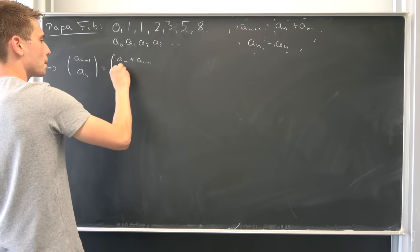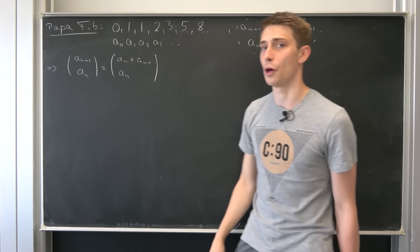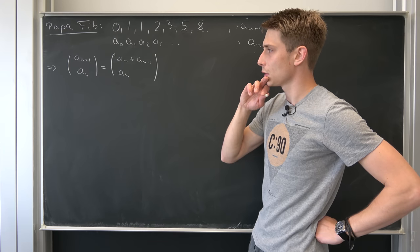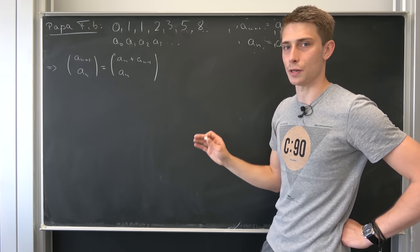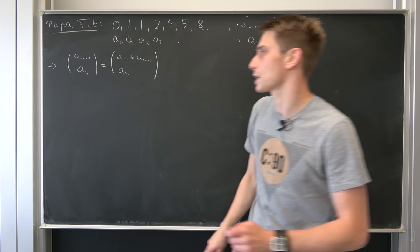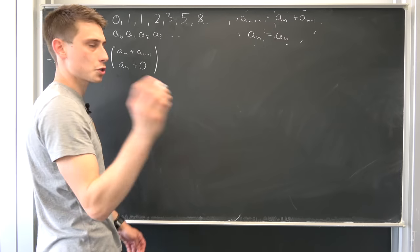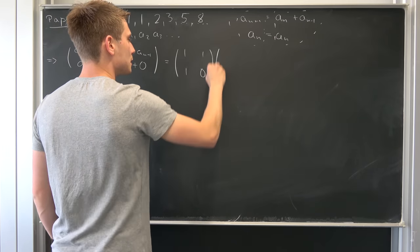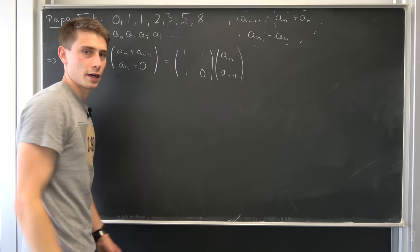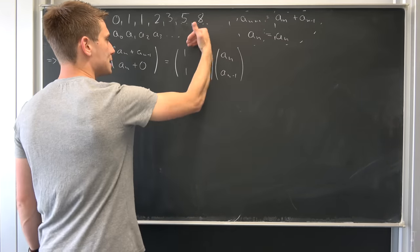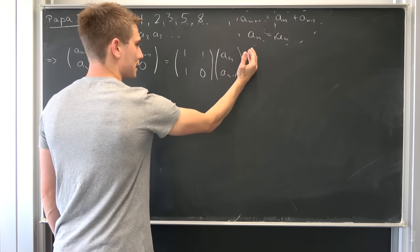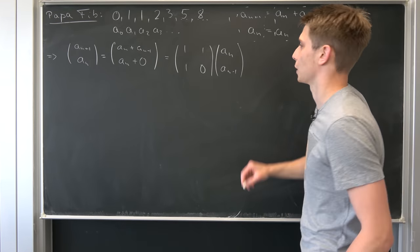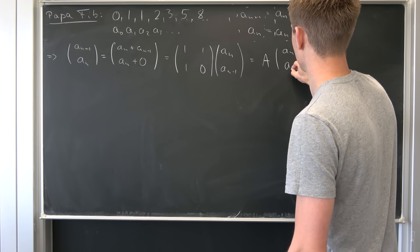We can go even further: this right here has some addition, so it looks like we took a matrix and multiplied it by a vector. We can add a zero in the second line and it wouldn't change anything. This observation allows us to write this as the matrix [[1,1],[1,0]] times [a_n, a_{n-1}]. We are going to call this matrix A, so this is A times [a_n, a_{n-1}].